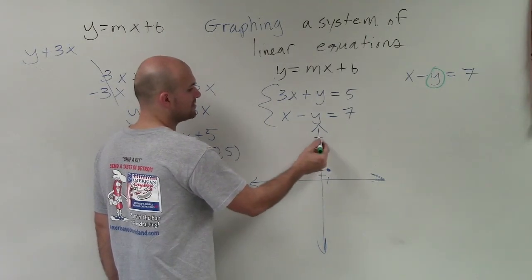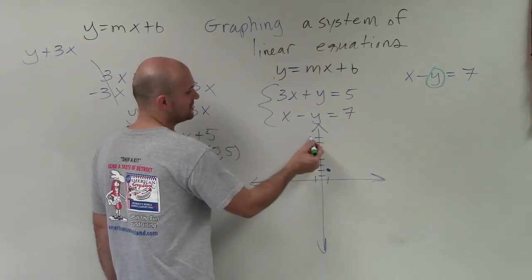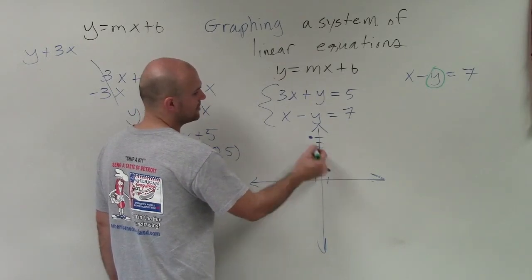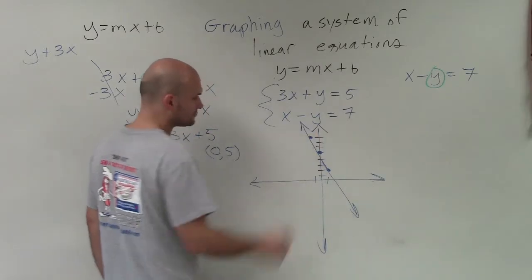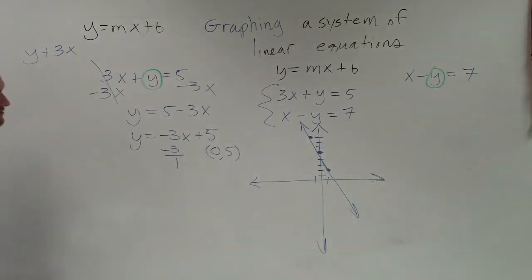I could also go up 3 in the positive direction, but then left 1 in the negative to still keep my slope negative. All right. So there's just a rough sketch of that first equation.